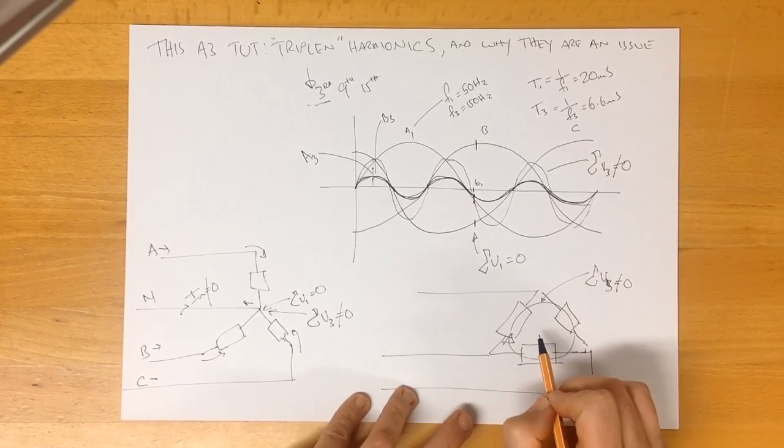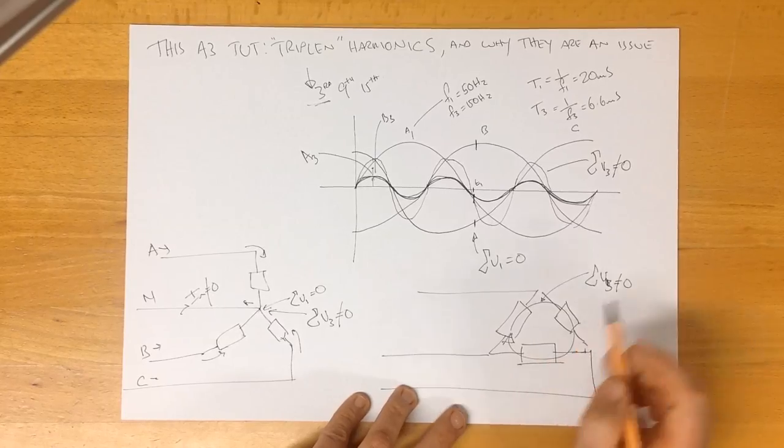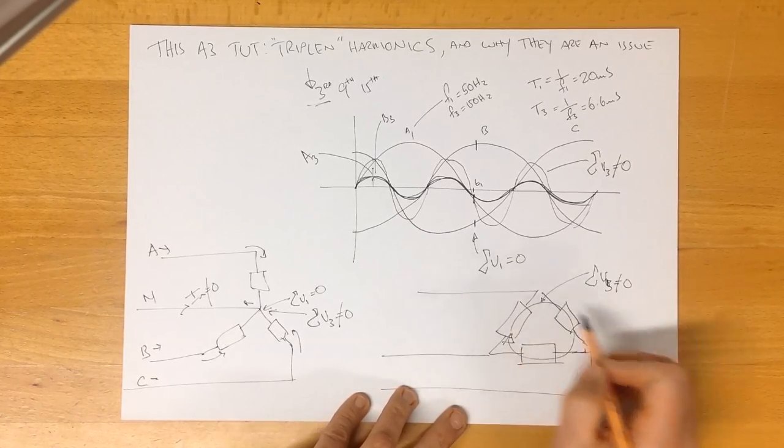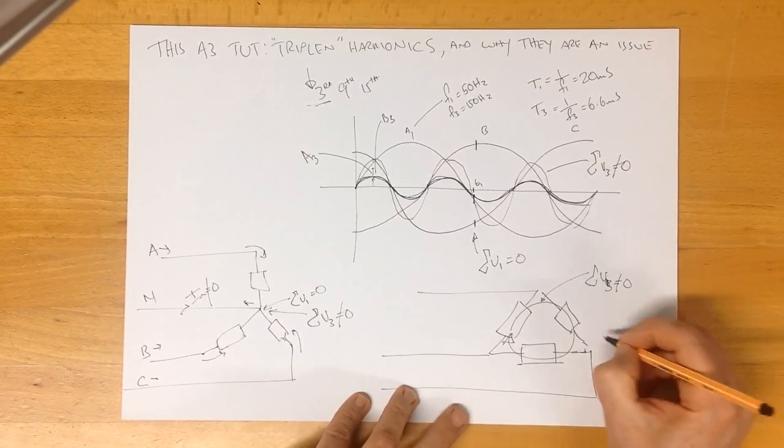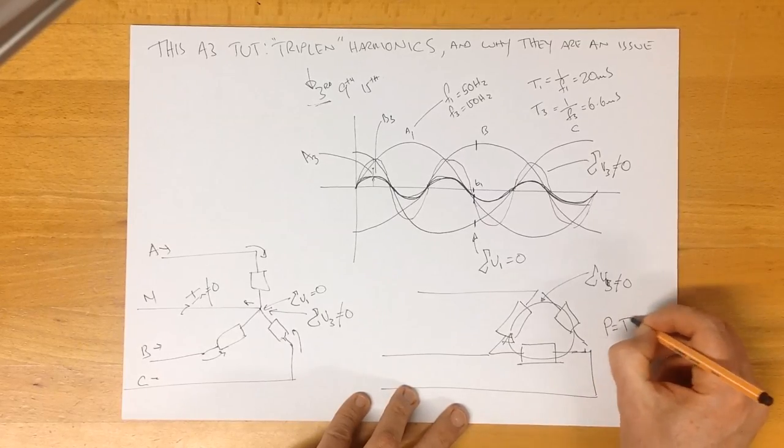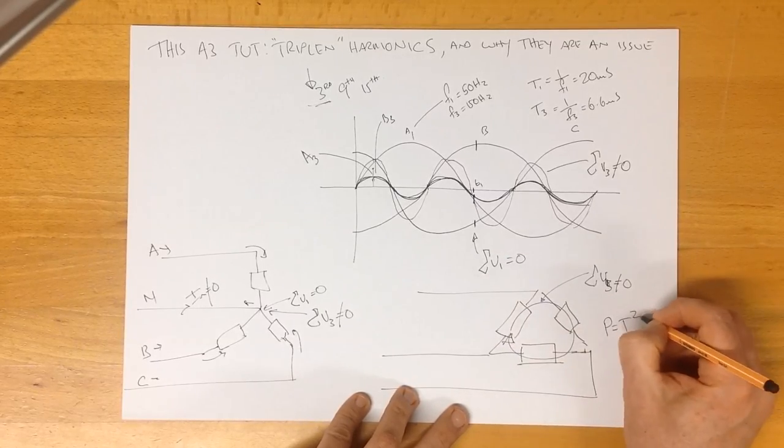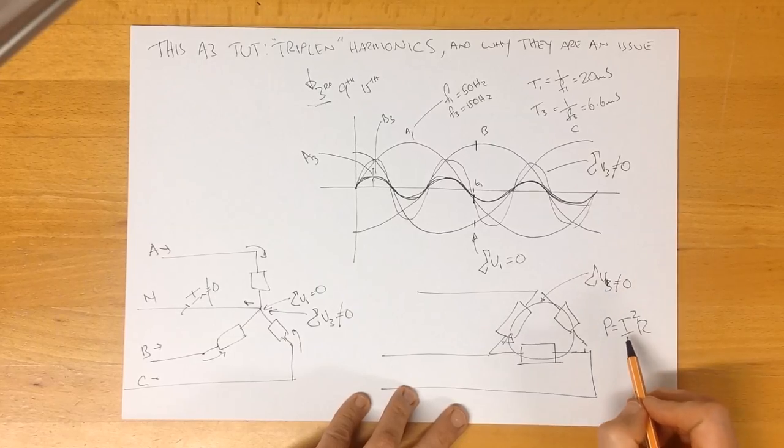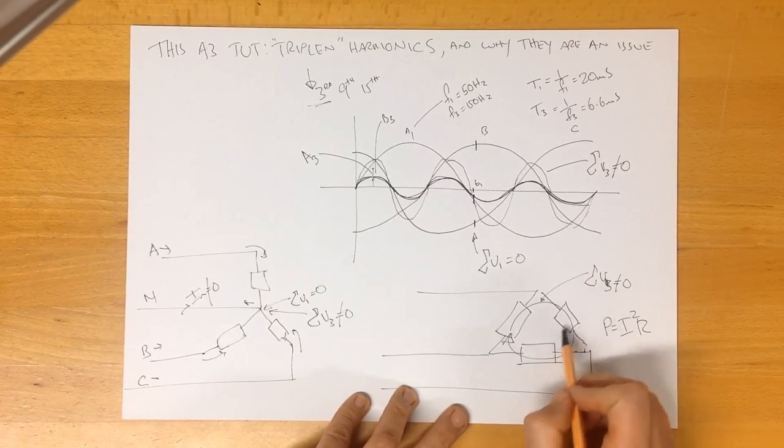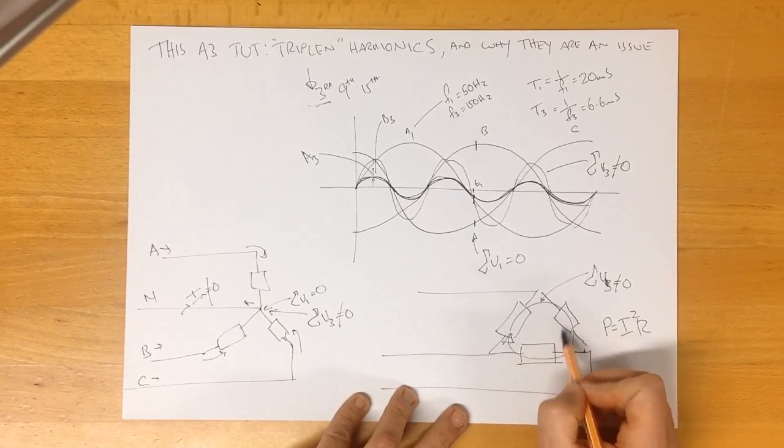Now why is this a problem in a delta system? In a delta system with these circulating currents, we know that the power that's dissipated in here is a function of the square of the current and the impedance of our circuit. These are all obviously impedances here.